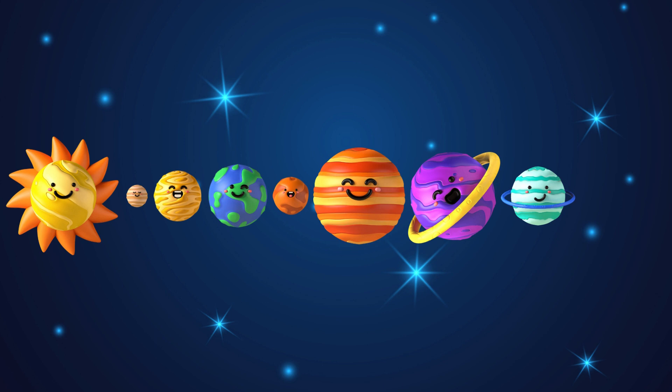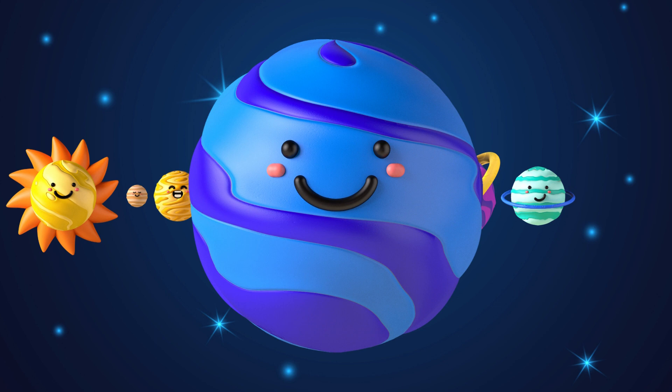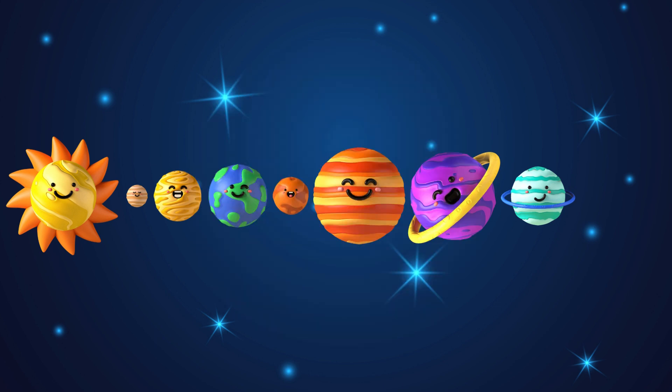And the eighth planet from the sun is Neptune. They call him the stormy planet, and he's the furthest away from the sun.